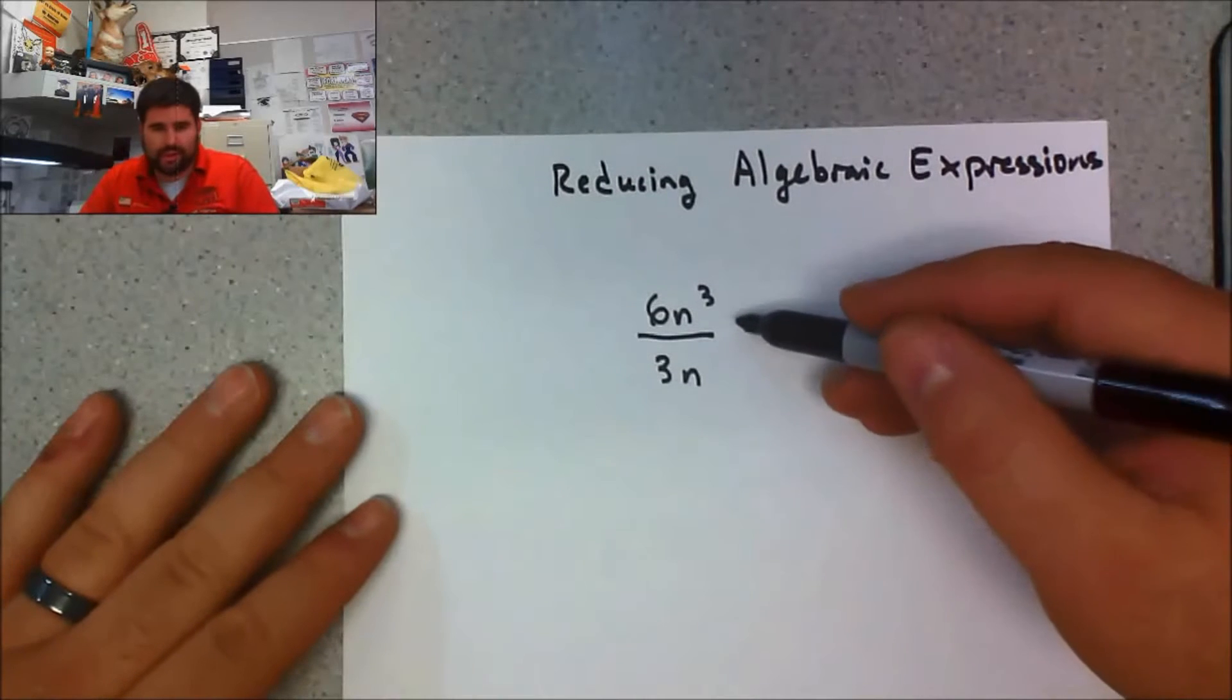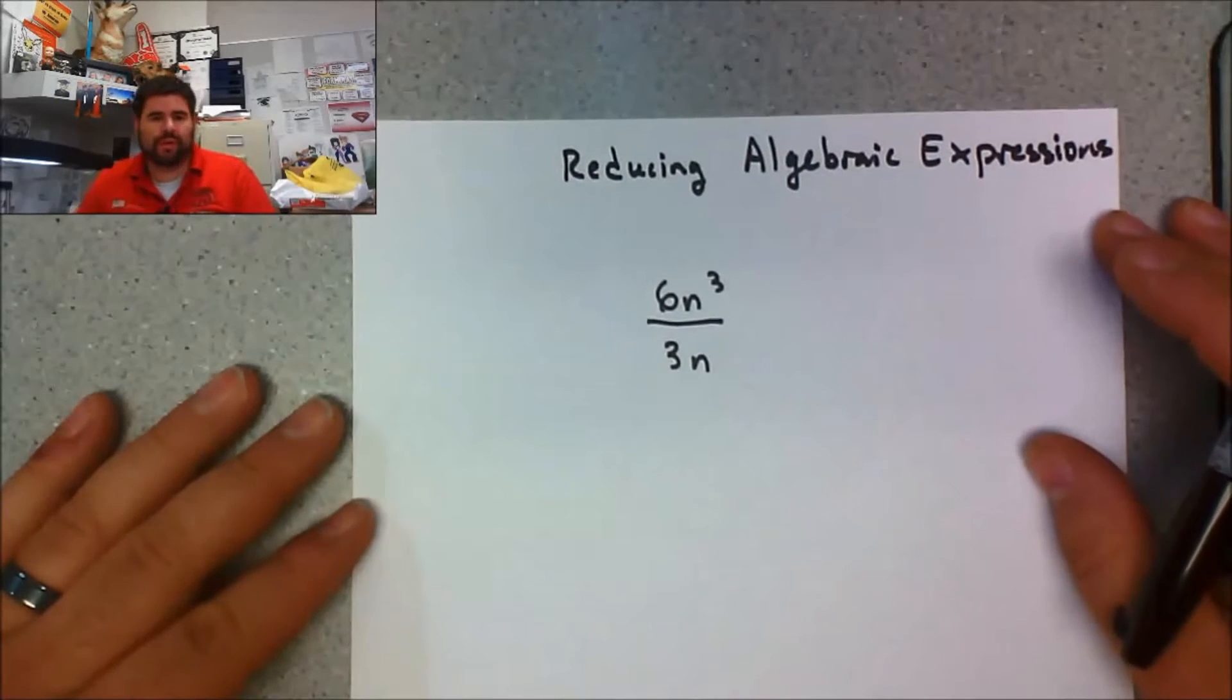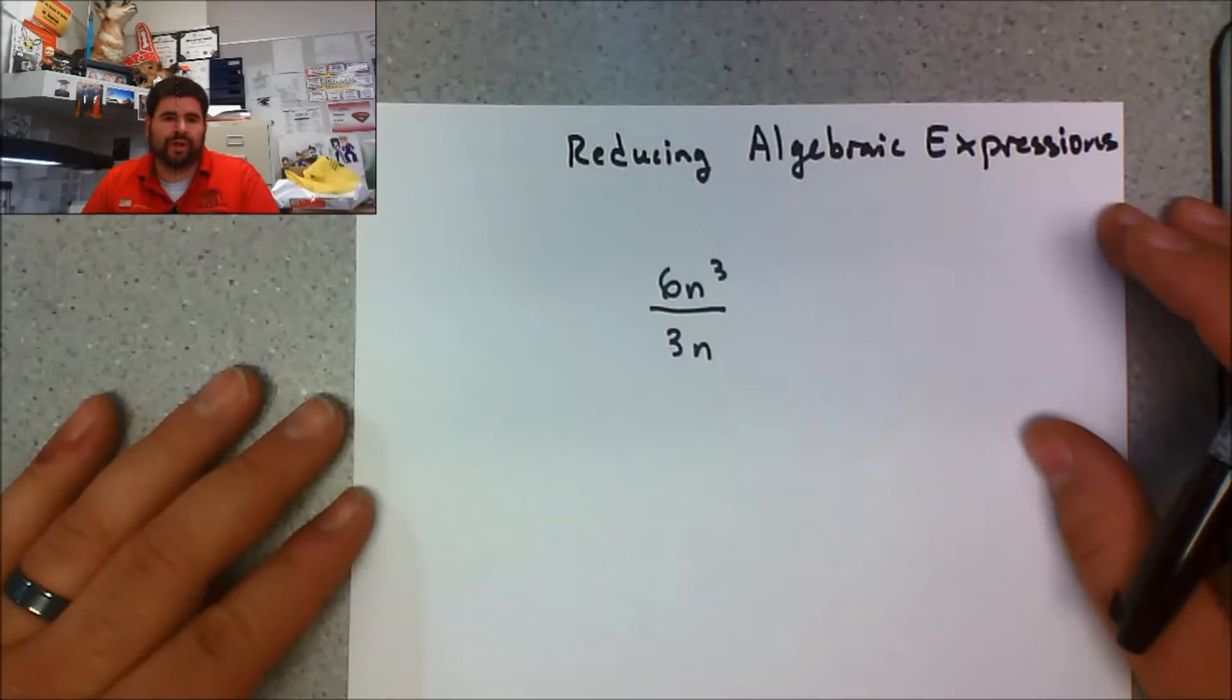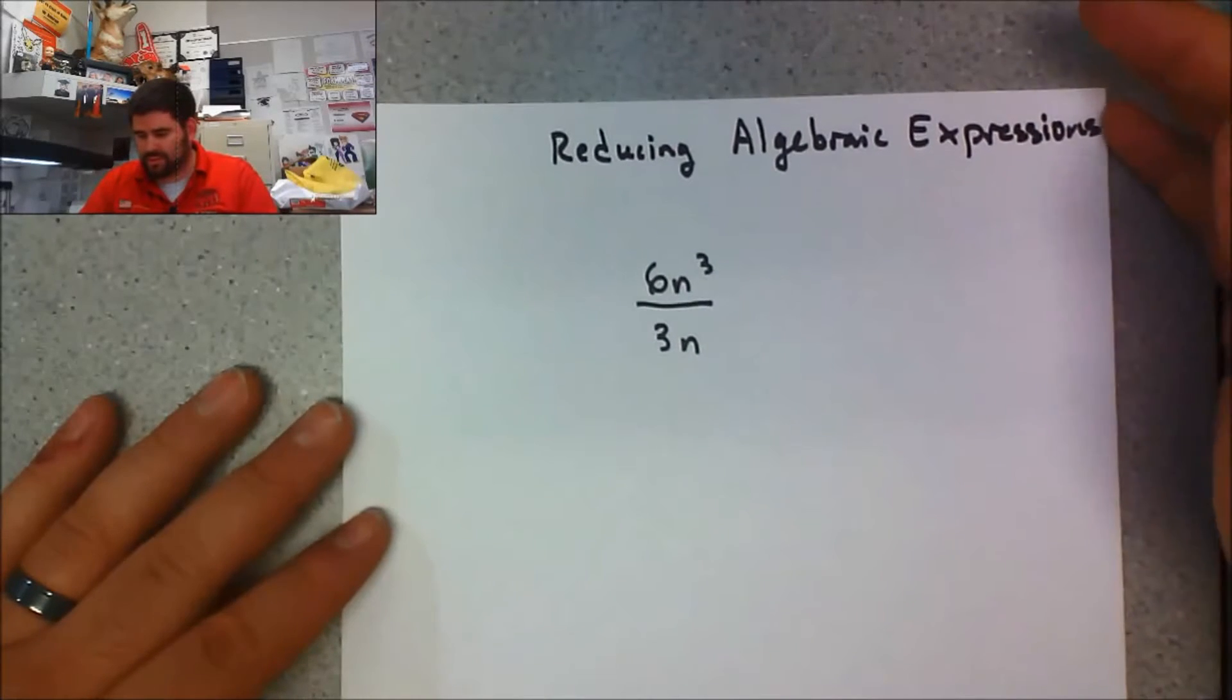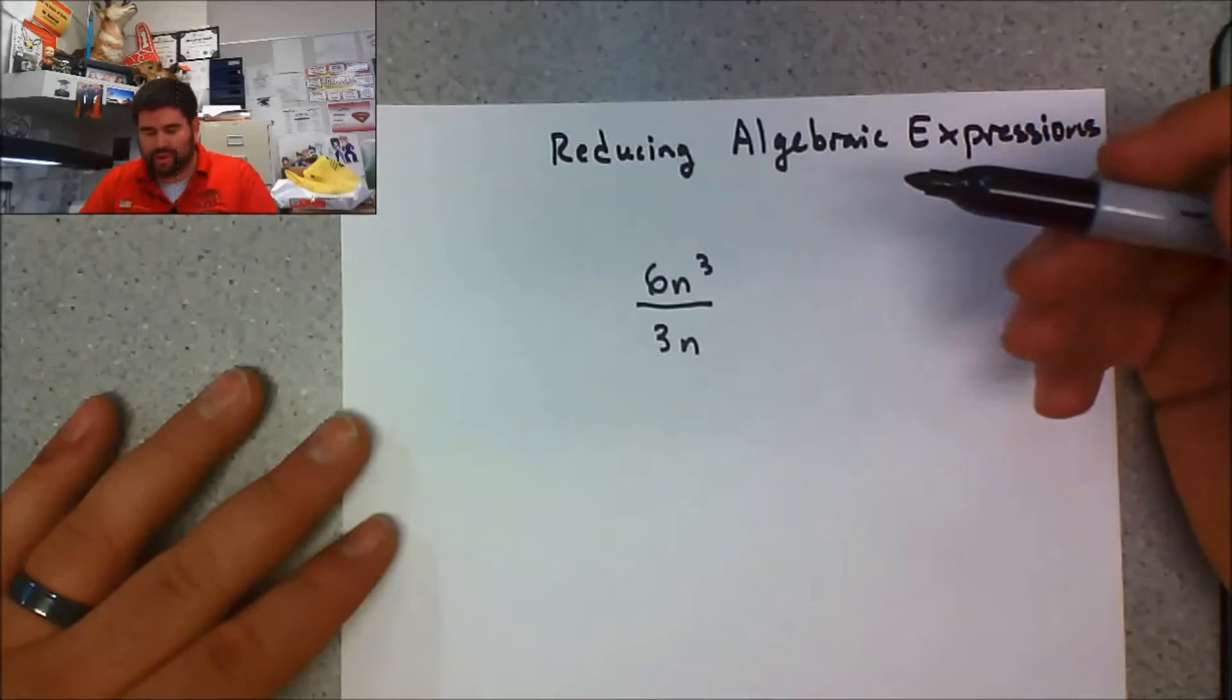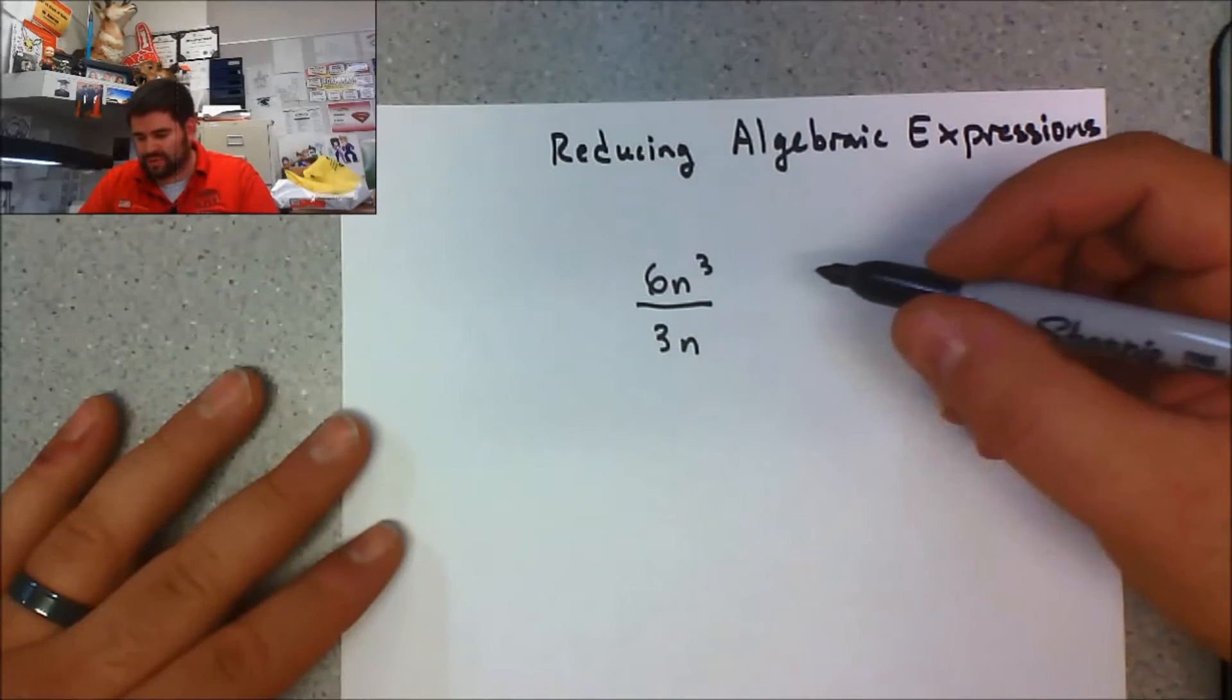When you're reducing any type of fraction, it's important to have a strong foundation in understanding greatest common factors of numbers. This will really help you because how we reduce something like this is to first take a look at what the greatest common factor is between the numbers.